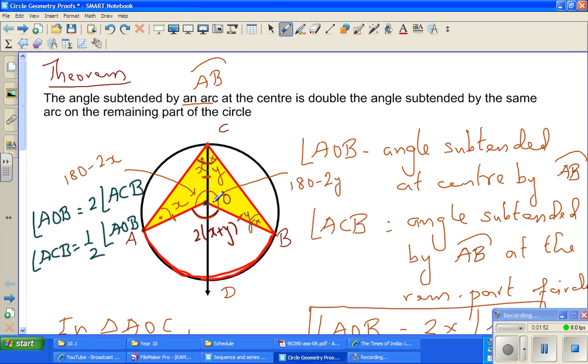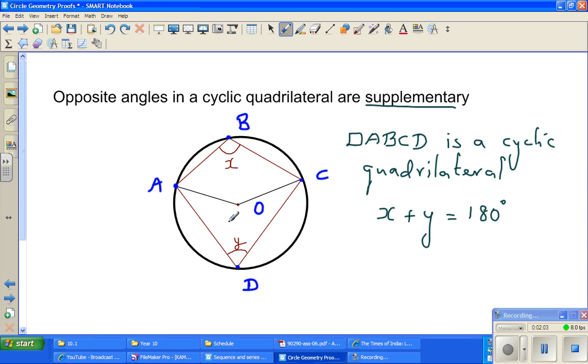I will repeat: AOB is double of ACB, or ACB is half of AOB. That same result we are going to use in this proof.